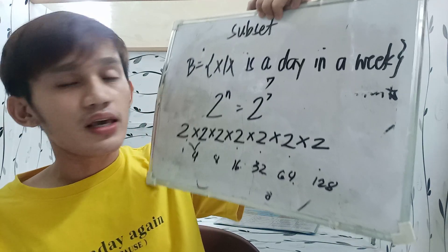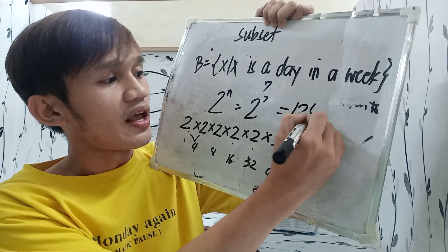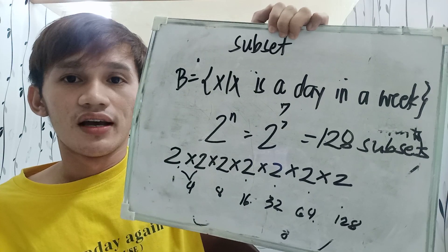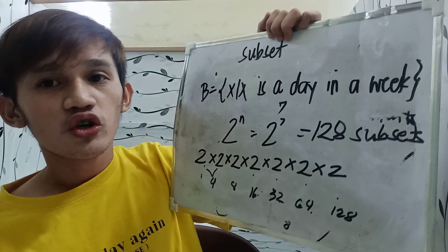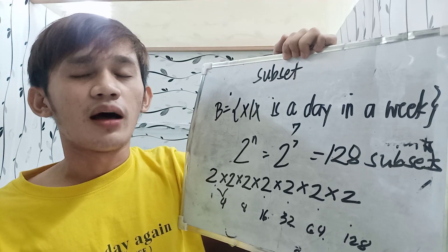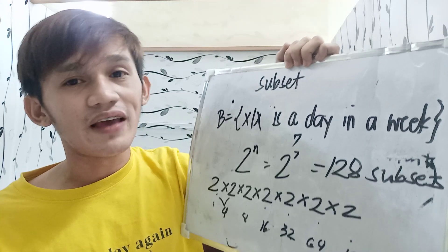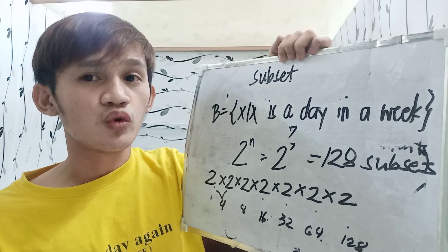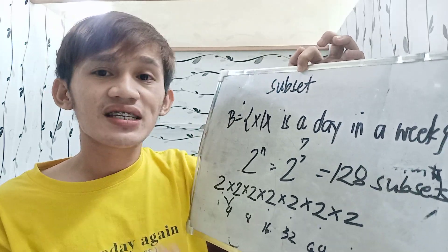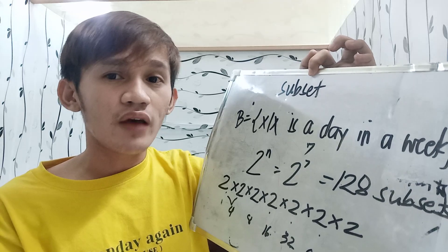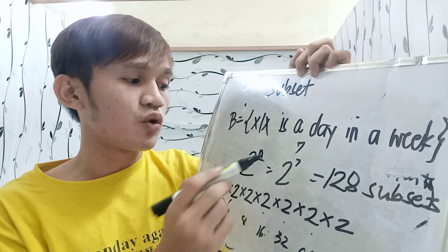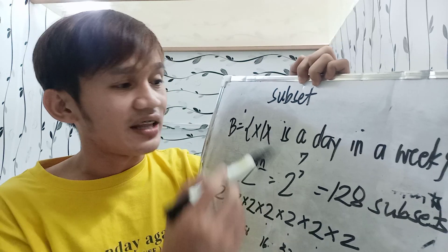So in SET B, we have 128 subsets. As simple as that — you just look at the given set, identify the number of elements, and use the formula 2 raised to N, where N represents the number of elements. It is always 2 raised to N; you just change the exponent N to match the number of elements in the given set.